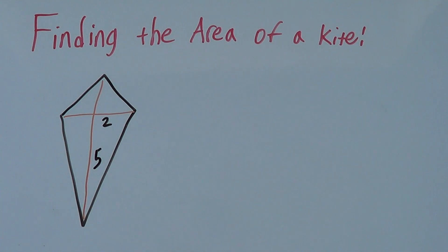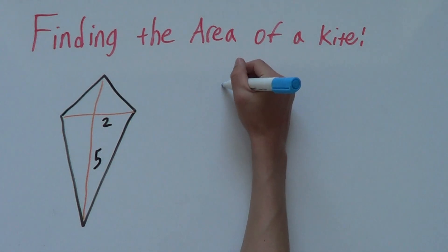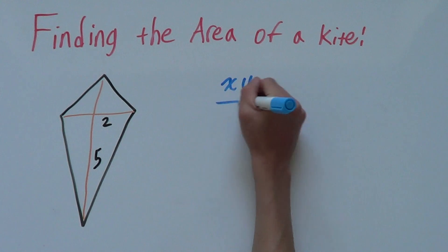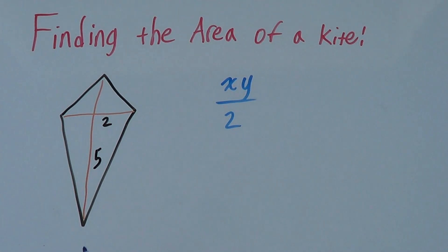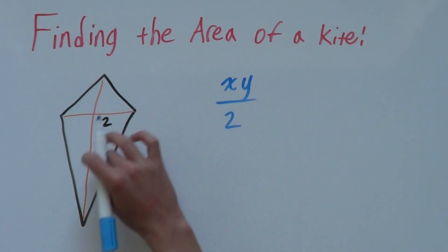We simply use the formula. The formula for the area of a kite is xy over 2, where x and y represent these two lines.